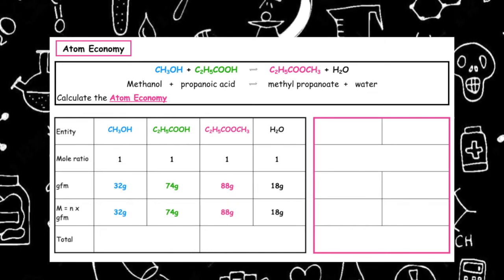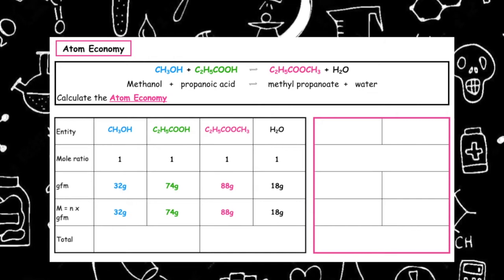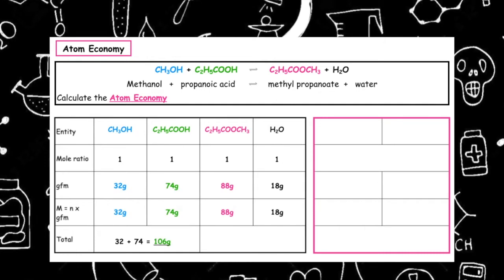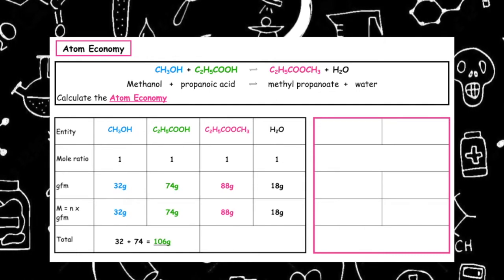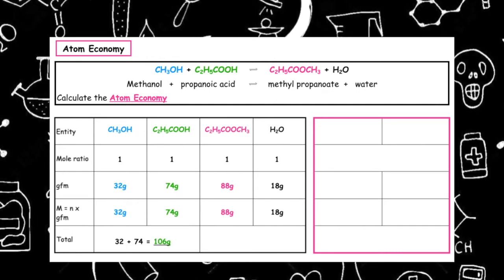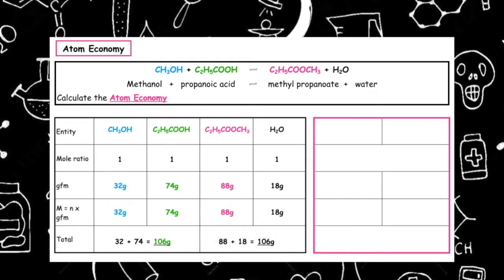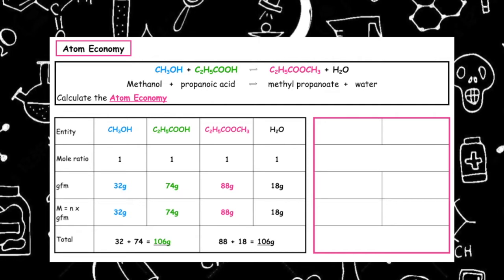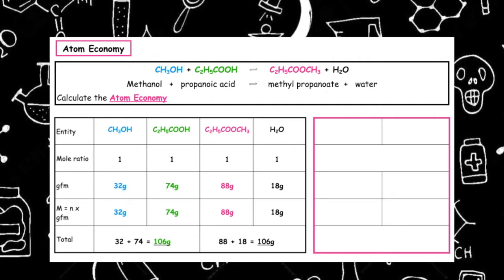Our double check is what goes in must come out. So on our reactants, if we add up 32 plus 74, it gives us a total mass of 106. And if we add up our products, 88 plus 18 gives us a total of 106. It means that it's balanced, what went in has came out.